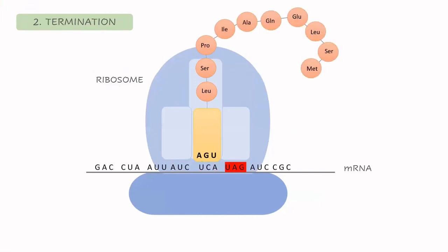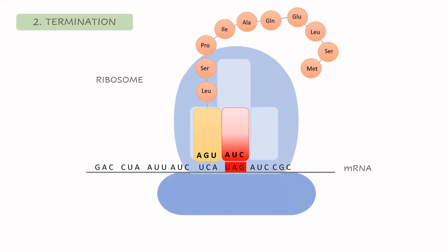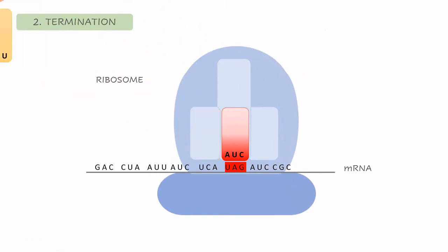This continues until the A site encounters the stop codon. The transfer RNA with the anticodon of the stop codon attaches to the A site, however it doesn't encode for any amino acid, so no bond can be made. The ribosome moves forward one position and liberates the polypeptide chain, also releasing all transfer RNAs. This polypeptide chain can then either fold itself to create a protein or interact with others and fold altogether to create a more complex protein, with the help of enzymes like chaperones. There is also a regulation process that will be discussed in the following session.